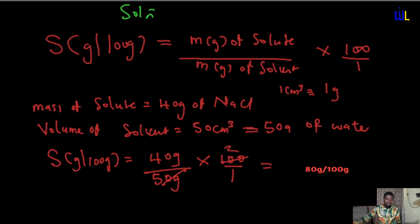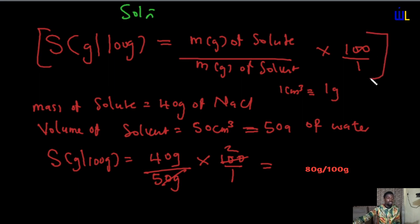Another way of solving this: if 2 grams is contained in 100, how many should be contained in 50? You can use that proportional expression to solve it, or simply use the mathematical expression: solubility in gram per 100 gram equals mass in gram of solute divided by mass in gram of solvent, times 100 over 1. I hope this video has been helpful — remember, this is Wits Lounge, Learning Made Easy.